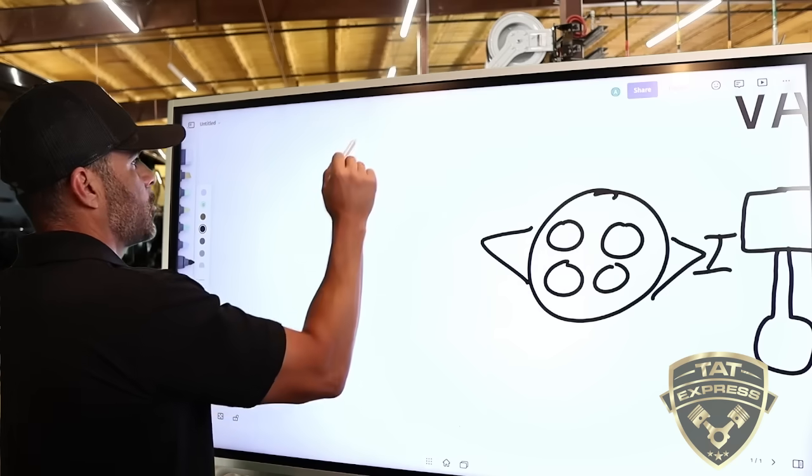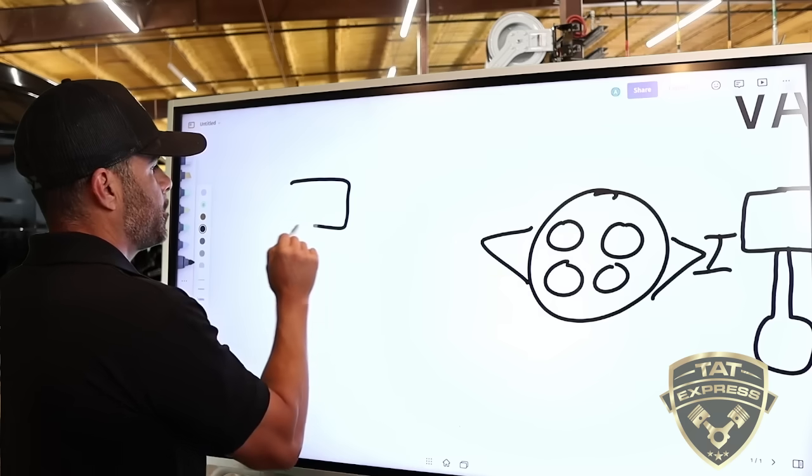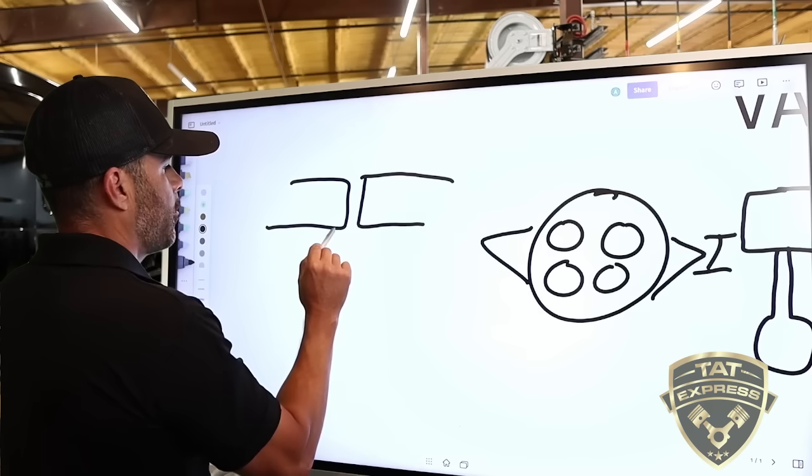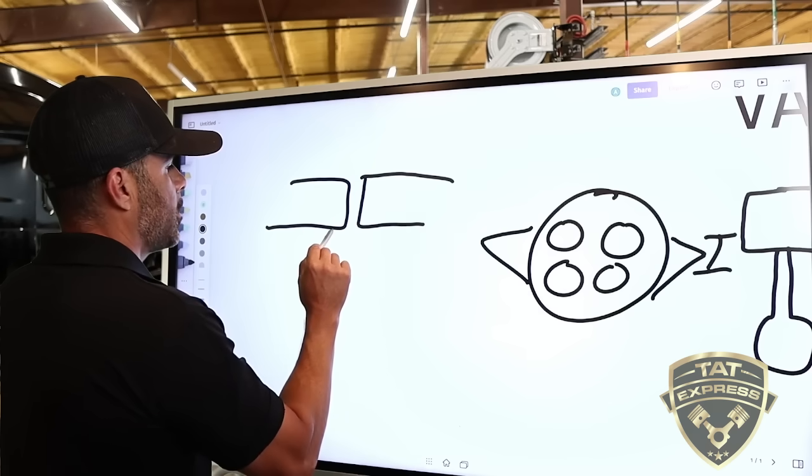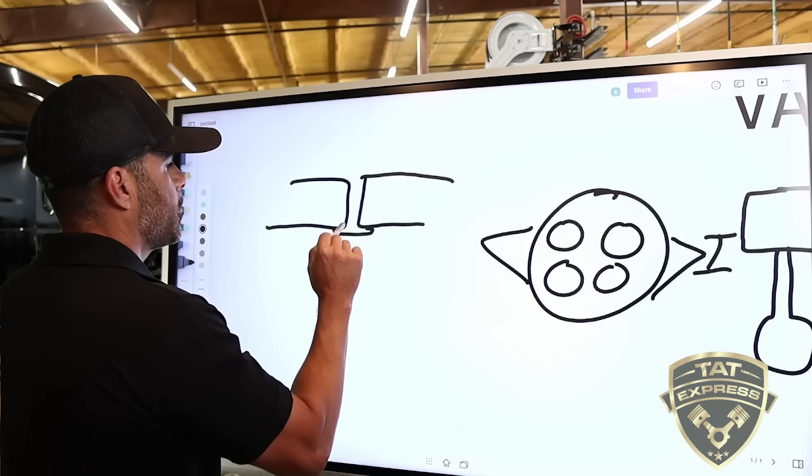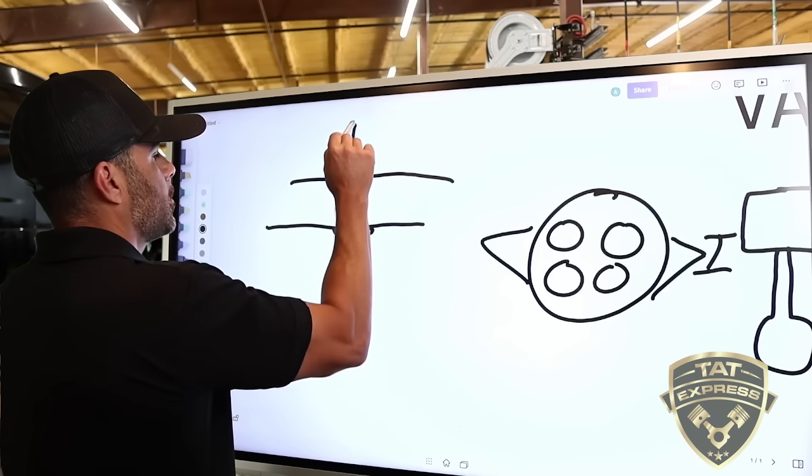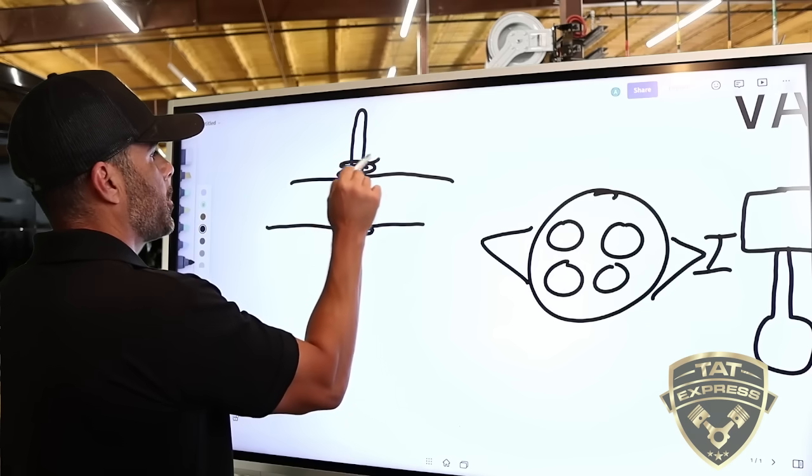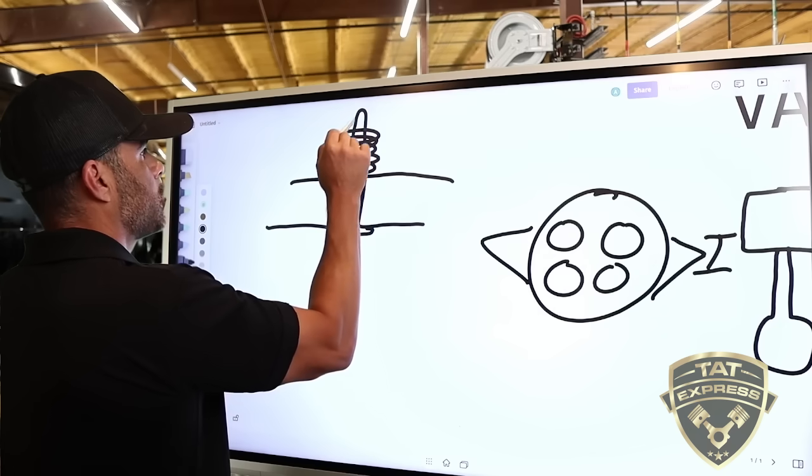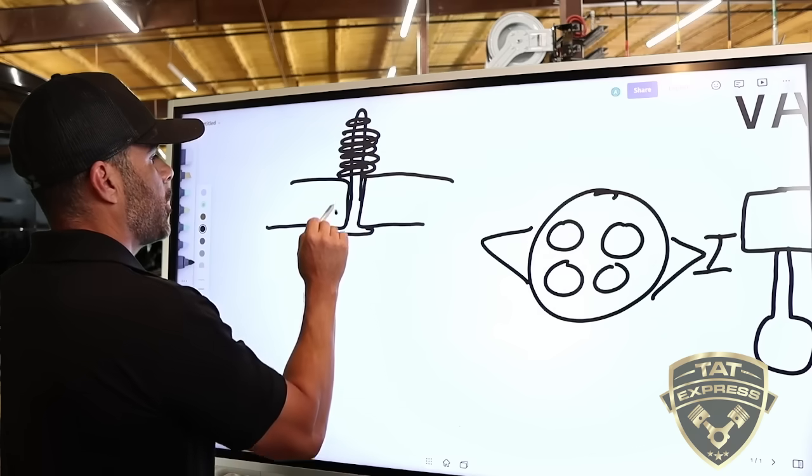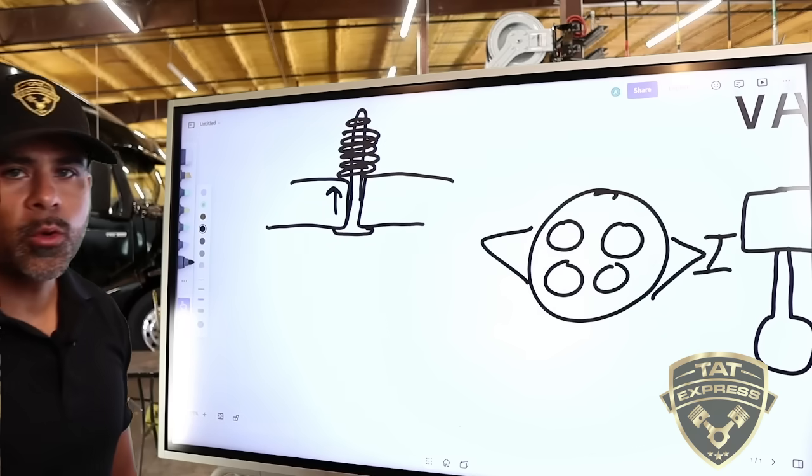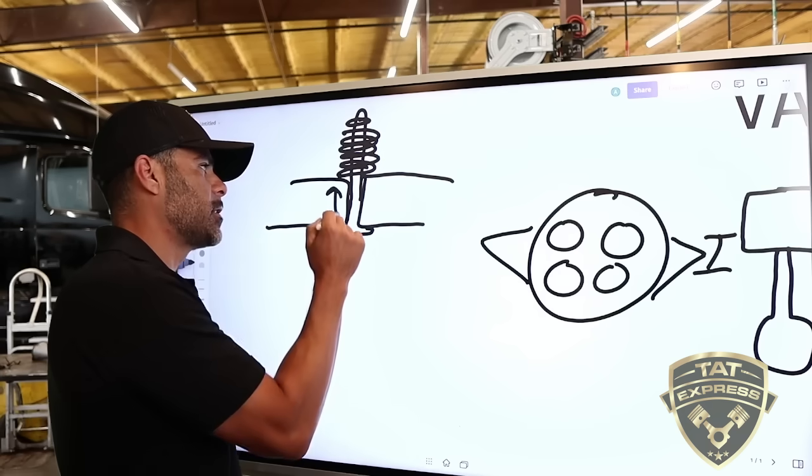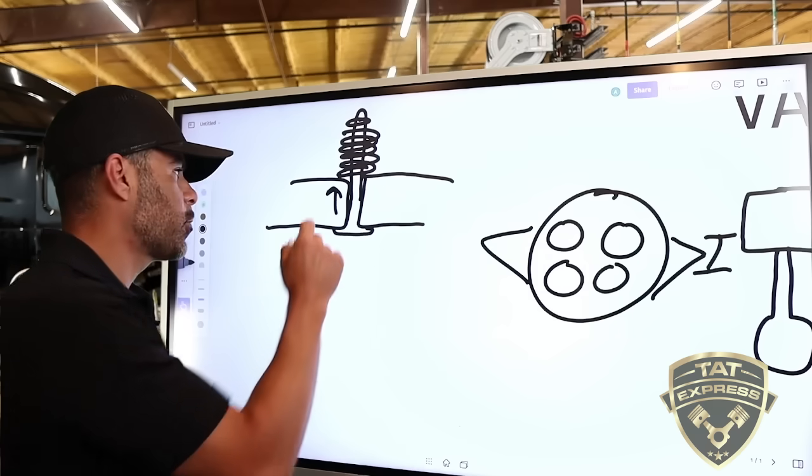So the way that it's closed is there's a spring with a retainer that's creating force upward. So normally it's closed, normally it's a closed position. So we have our cylinder head, we have our valve that's going to be seated all the way up against the head, and we have a spring with a retainer creating force upward.